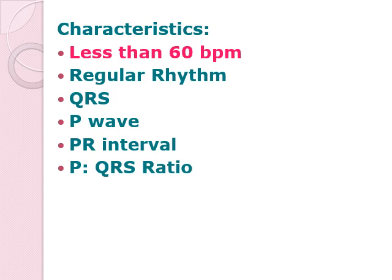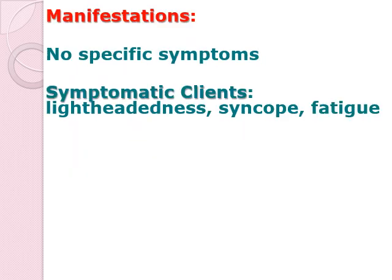All characteristics of normal sinus rhythm are the same for sinus bradycardia, except the heart rate is less than 60 BPM. For manifestations, patients may be asymptomatic at times, but once the heart rate becomes very slow, they will show signs and symptoms of decreased cardiac output — such as decreased level of consciousness, syncope or fainting, hypotension, lightheadedness, and easy fatigability.